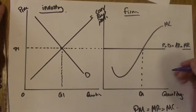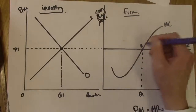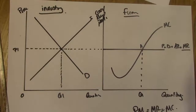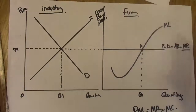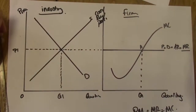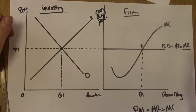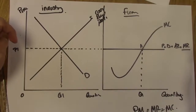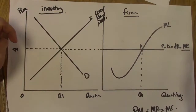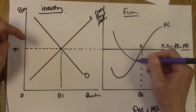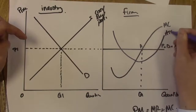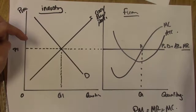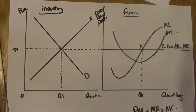We can call that profit maximization point 'A'. Next, we need to add the average cost curve — that's a U-shaped curve. One key thing to remember: the lowest point of the ATC curve must cut through the MC curve. Draw the ATC curve so that its lowest point intersects the MC curve. This is necessary to show the area of supernormal profit.